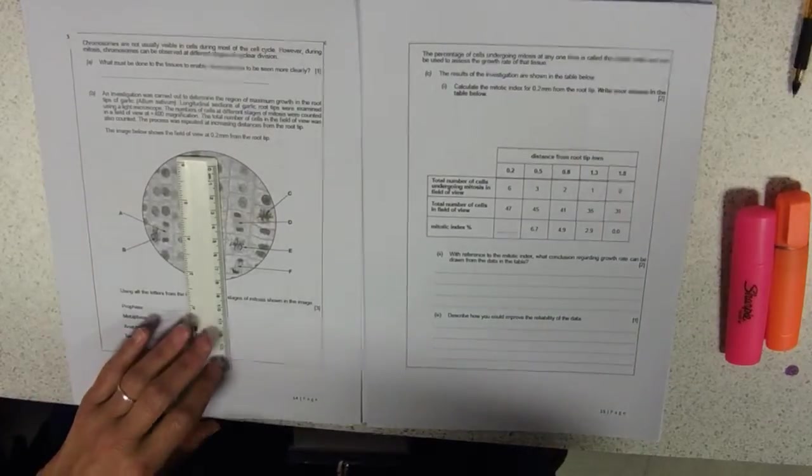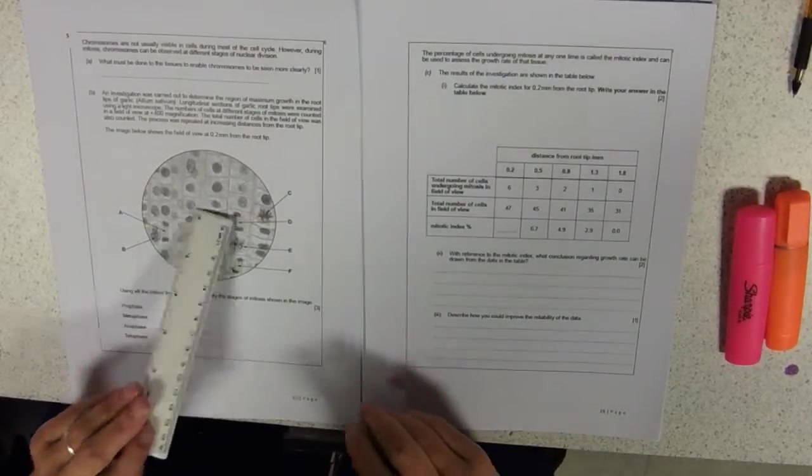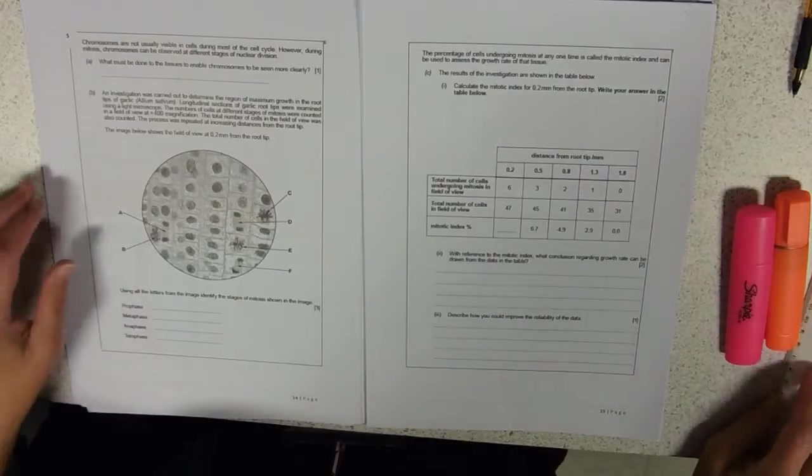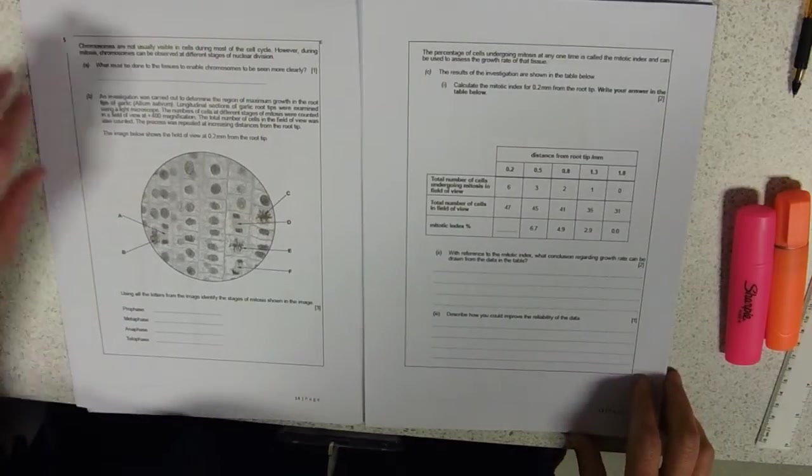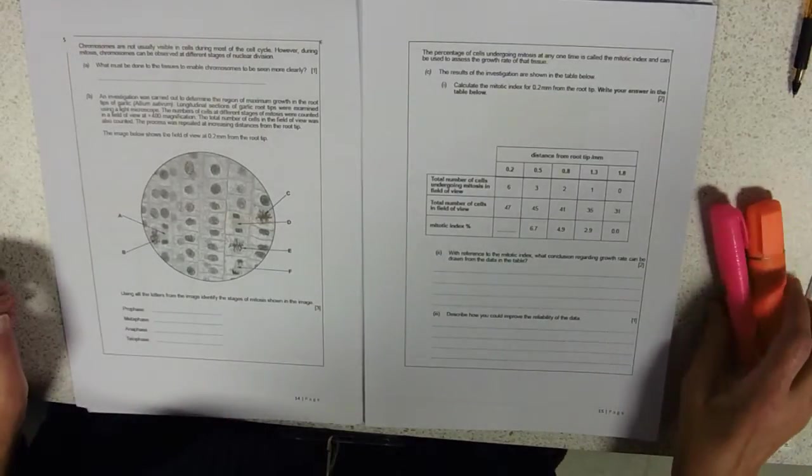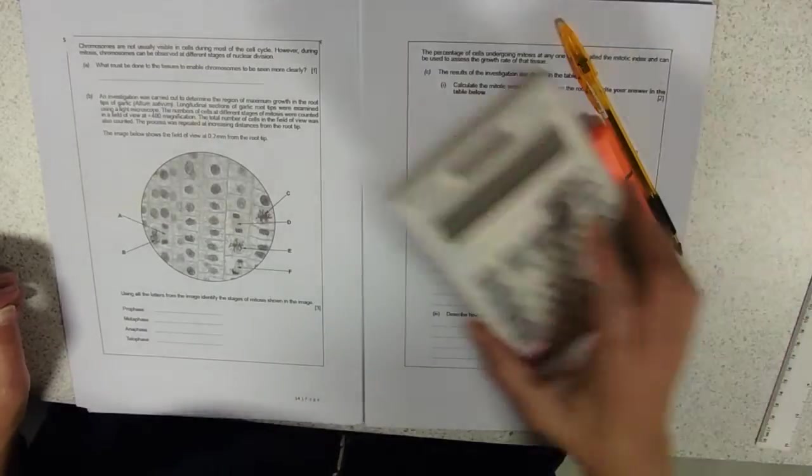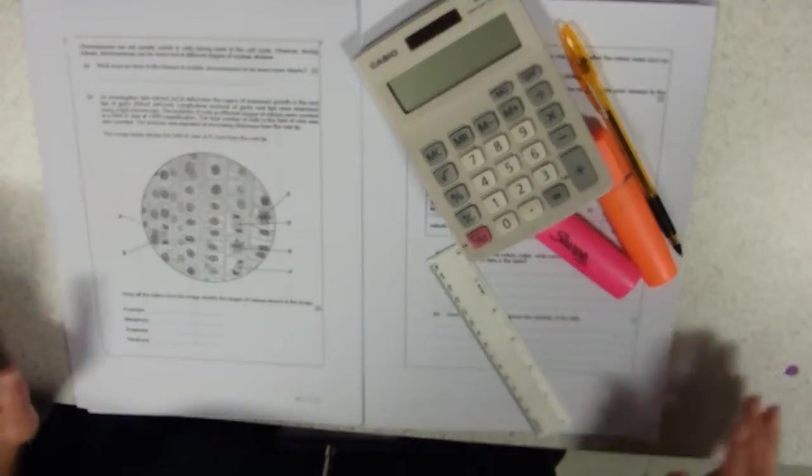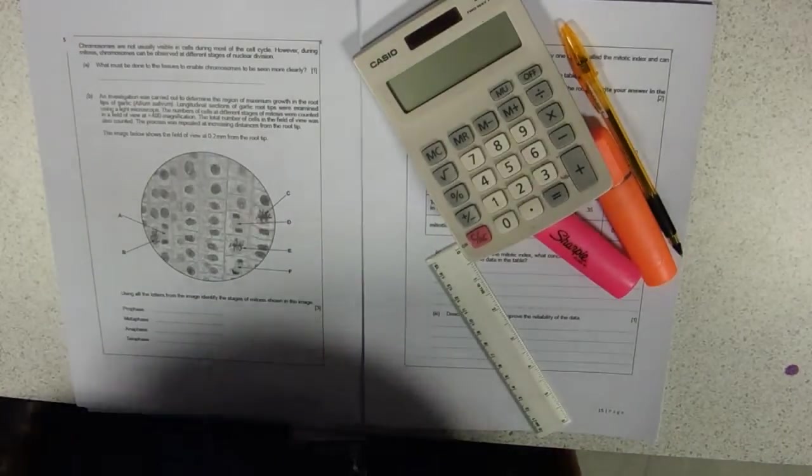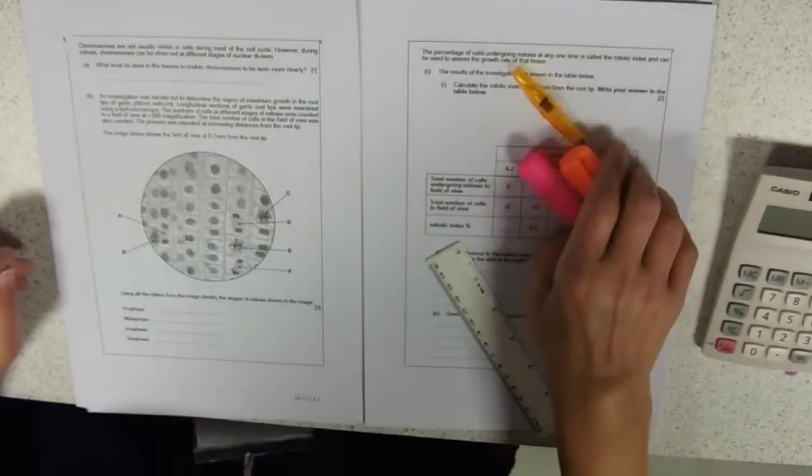OK, this is the Component 2 class questions booklet. This is question 5, so we're in the topic of cell division. I've got all my gear, highlighters and a pen and a calculator and a ruler because that's what you need when you're doing questions.